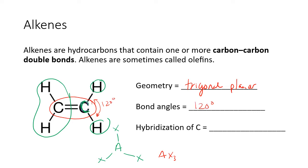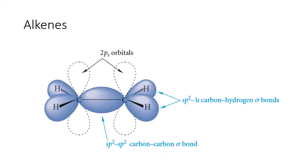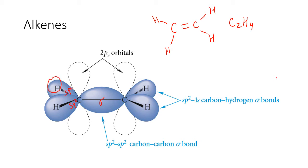The hybridization of either one of those carbons is going to be SP2 hybridized. If we look at something like ethylene, which is the simplest alkene you can have — just one carbon-carbon double bond — the formula would be C2H4. What we have is a sigma bond that represents the SP2-SP2 carbon overlap right along the internuclear axis. And then in each of the other SP2 hybrid orbitals, we're overlapping with a 1S orbital on each of the hydrogens, so those are also sigma bonds.